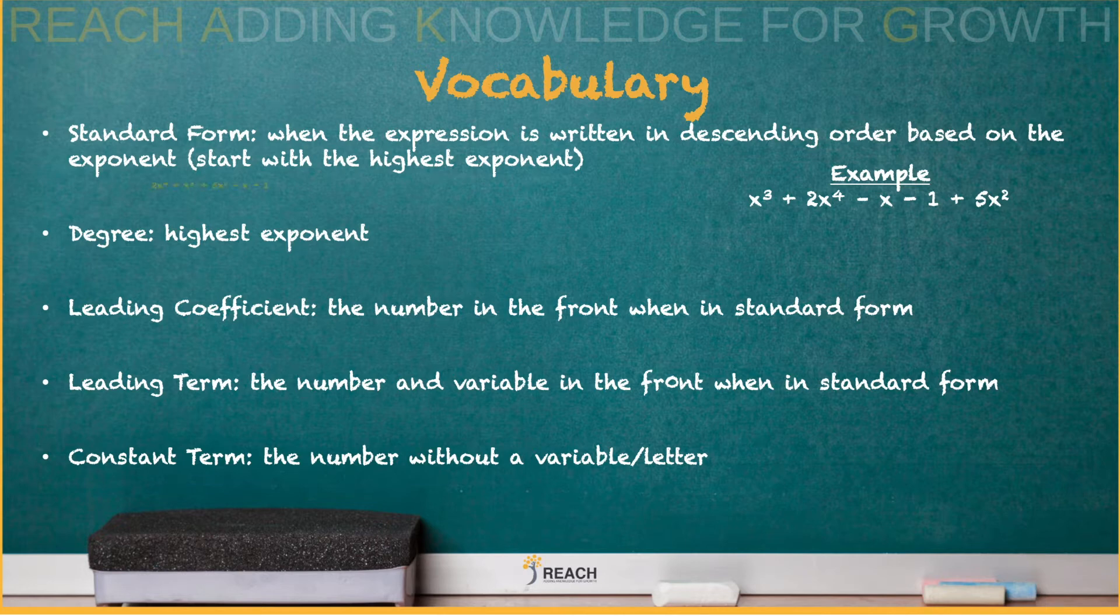So the highest one is 4, and you just count down based on what you have in the example. So the final answer for your standard form: 2X to the fourth plus X cubed plus 5X squared minus X minus one. So now we have it in standard form. What's the degree? What's the highest exponent? It is 4.